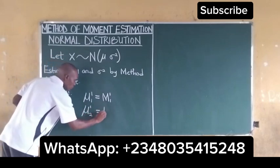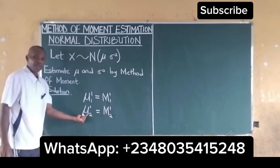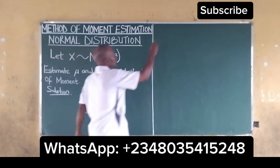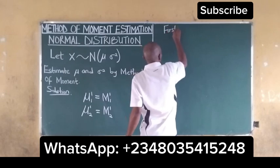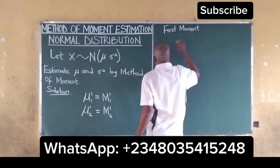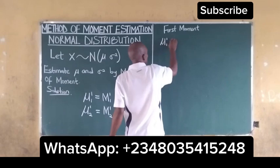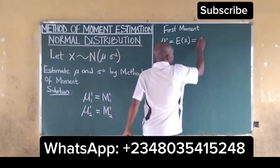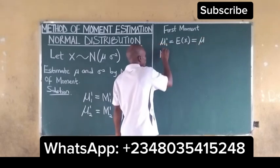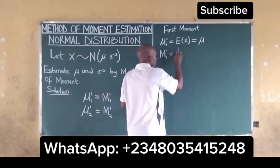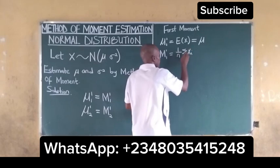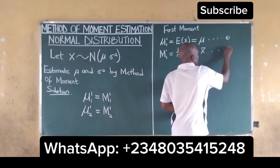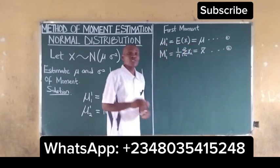We also have mu_1_2, meaning the population mean for the second moment, equal to the sample mean for the second moment. For the first moment, mu_1_1 is equal to the expected value of X, which equals mu. For the sample mean of the first moment, we have (1/n) times the summation of x_i, from i = 1 to n, equal to x̄. We take these as equation 1 and equation 2.